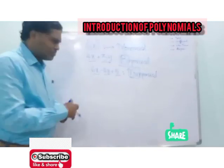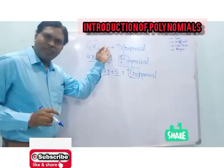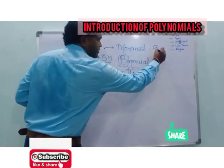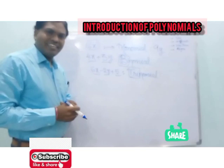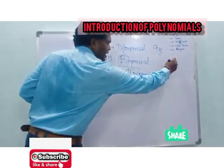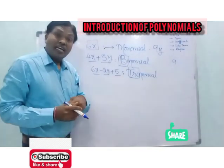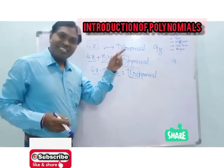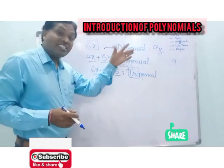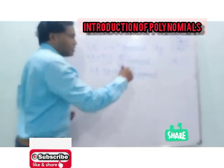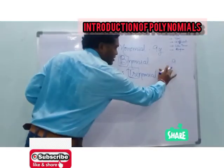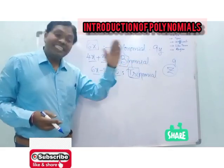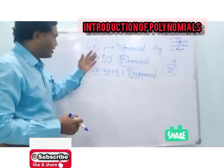For monomial, can you give one more example? Let us see: 9y — only one term is there. Even the number 9 alone is a monomial because 9 is a constant, so it is called a constant polynomial. And z alone — only one term — that is also a monomial, but since it is a variable, it is a literal polynomial.